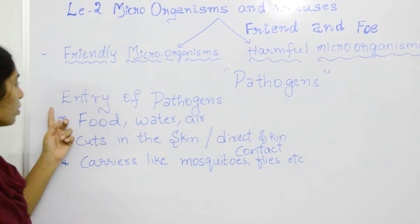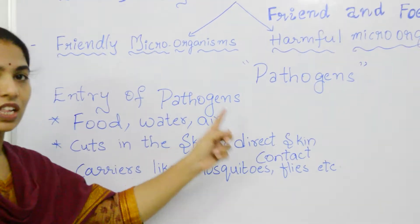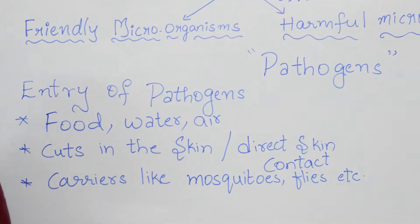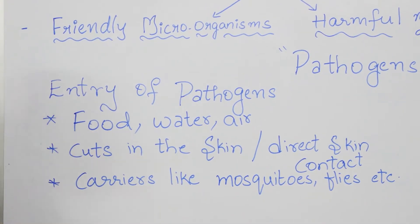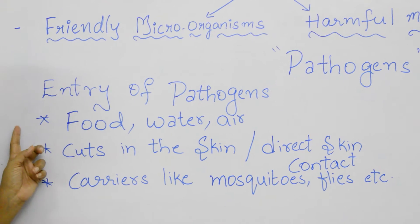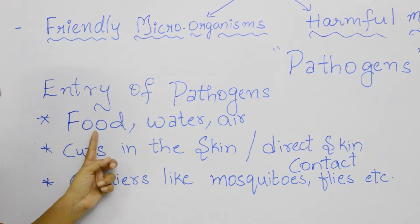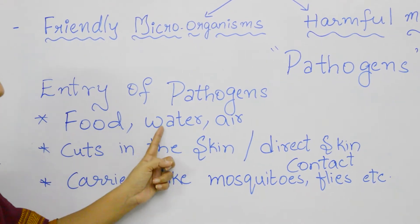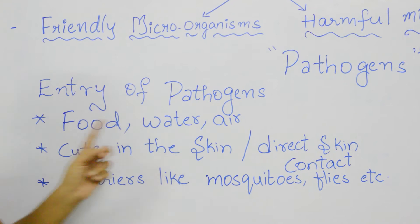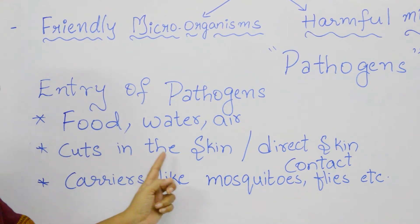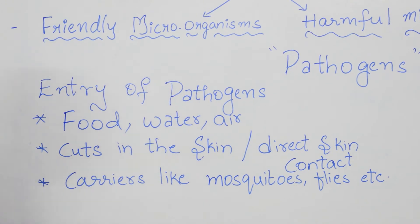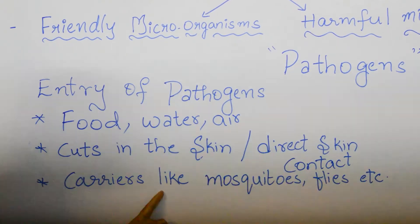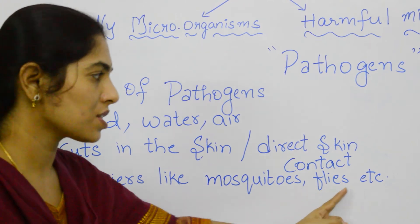How does the entry of pathogens take place into our body? There are different ways these pathogens enter our body. The first one is through food, water, or air. The second is through cuts in the skin or direct skin contact. And the third is through carriers such as mosquitoes, flies, etc.